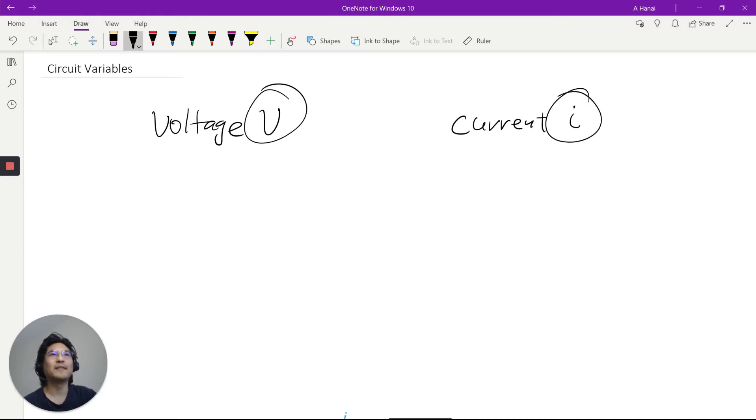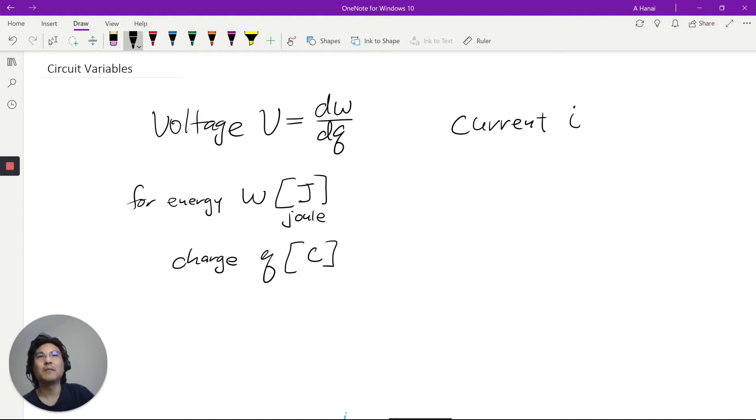Voltage V, current I. By definition, voltage is energy per charge. This is in joules and charge Q is in coulombs. Voltage is in volts.